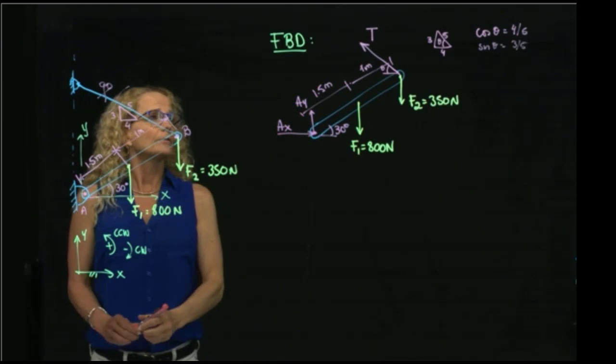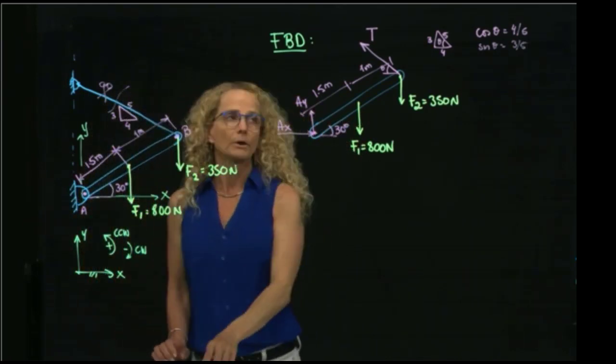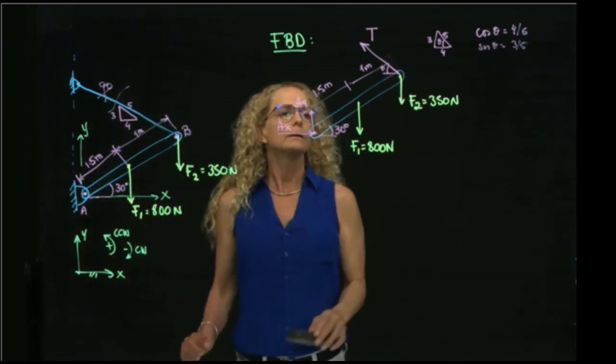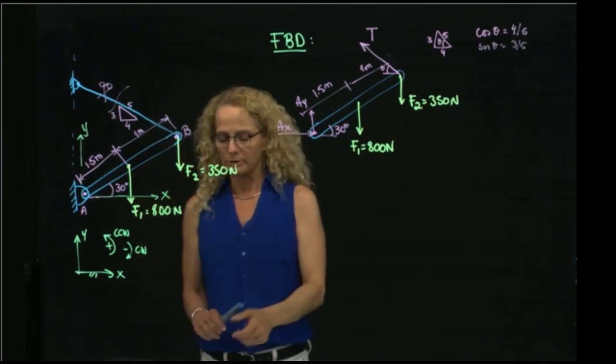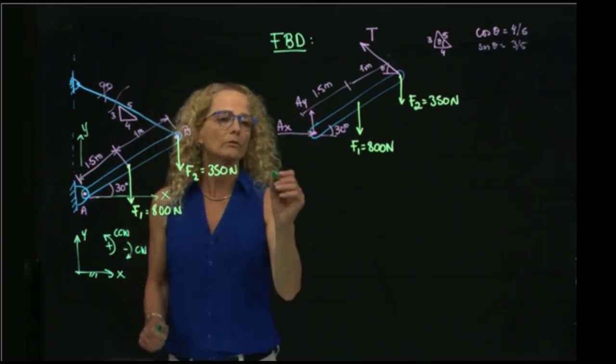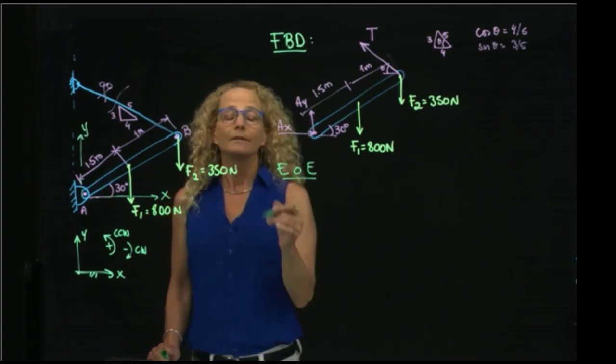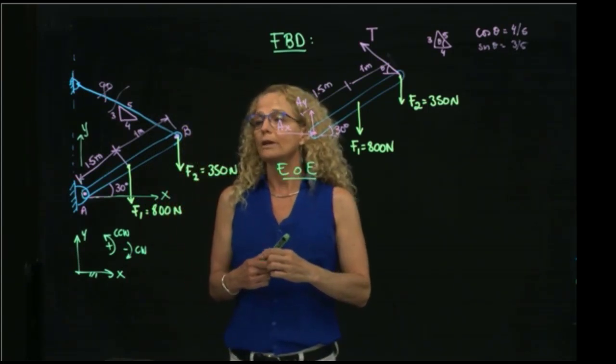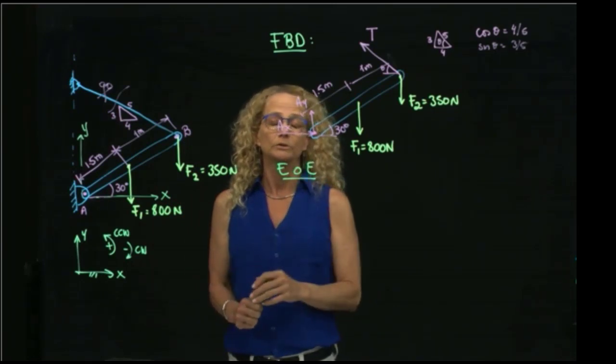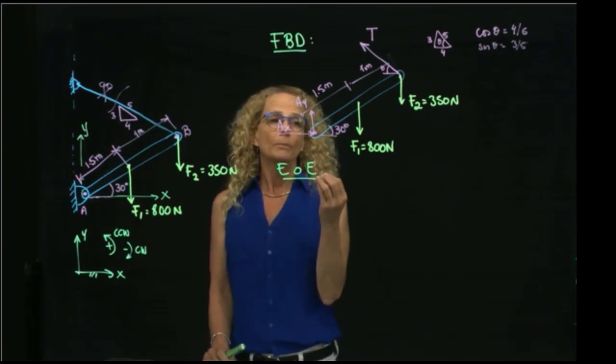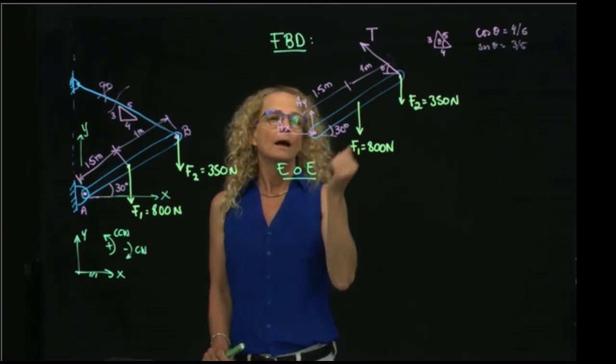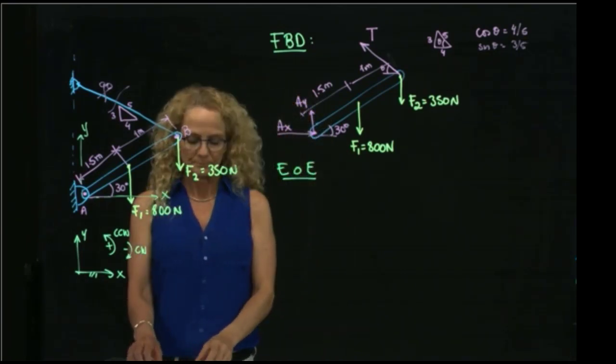Now that we have everything established in our free body diagram, then now we can apply our equations of equilibrium. Since this is a rigid body in 2D, we know that we have three equations of equilibrium, which is moment with respect to one point, adding forces in X, and adding forces in Y.